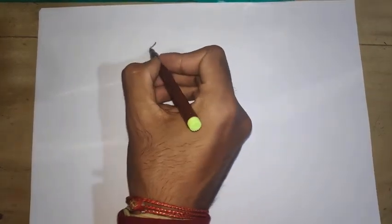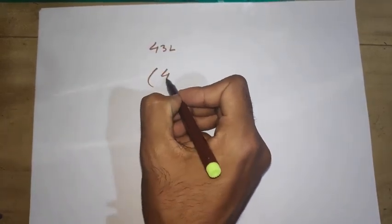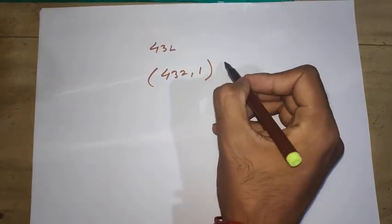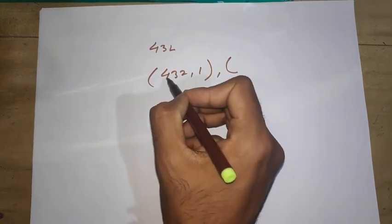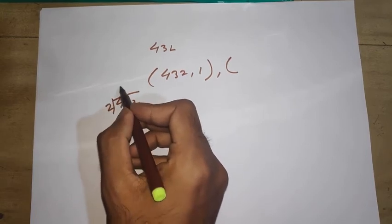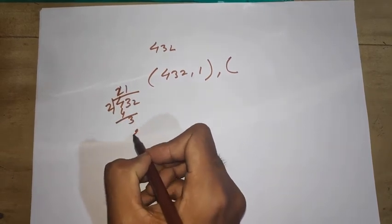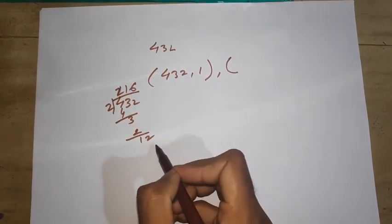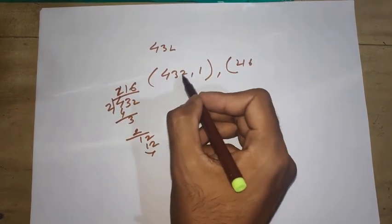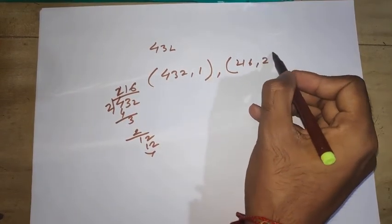I'm going to factorize 432. Write 432 and 1. Now divide by 2 - it's very easy, you don't have to write it all out. 432 divided by 2 gives you 216. What number did you divide by? 2. So multiply 1 by 2 to get 2.